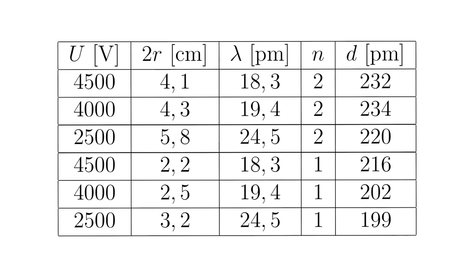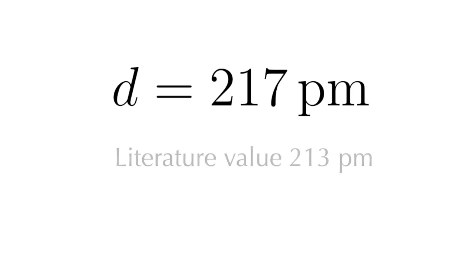Since the sphere radius is large R equals 6.5 centimeters, the wavelength is determined by the voltage of the electron tube, and small r and n can be read off the fluorescent screen. The graphite lattice constant d can be determined. This results in the mean value d equals 217 picometers, in good agreement with the literature value of 213 picometers.